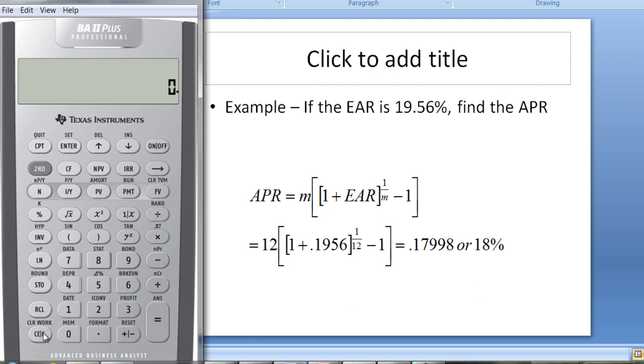Now, there's an easier way to do this, because the financial calculator, the BA2 plus, actually has a function that does this, and the function here is ICONVERT, so you hit 2nd ICONVERT, and if you want to clear what's in here, it's going to be 2nd CLEAR WORKSHEET. NOM stands for nominal rate, that's the APR, so if we know what the APR is, let's put it in as 18%, you have to make sure you see that equal sign, and you see C/Y, that's the number of compounding period, so if it's monthly, it's 12, if it's semi-annually, it's 2, if it's quarterly, it's 4, and then we can get down to the effective rate and just hit compute, and we get that same answer we got before, 19.56%.